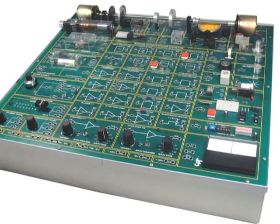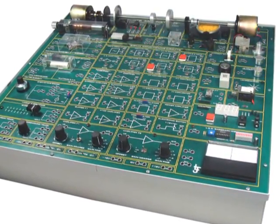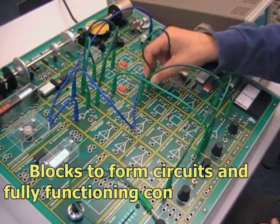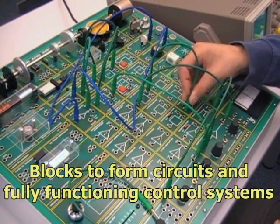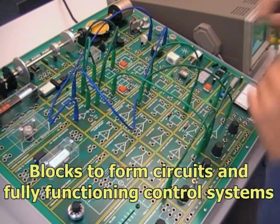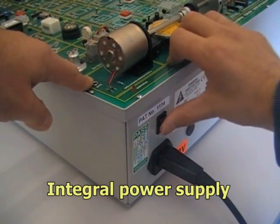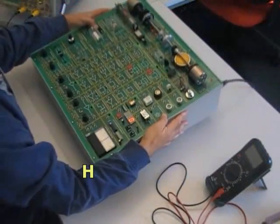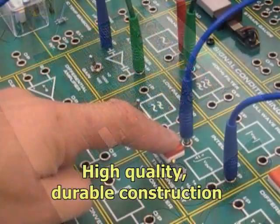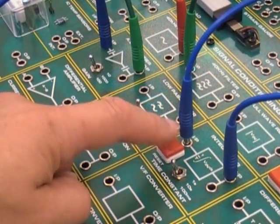The D1750 is a self-contained trainer that allows learners to interconnect functional blocks to form circuits and fully functioning control systems. The desktop unit includes an integral power supply. The high-quality, durable construction enables reliable and accurate experimentation.